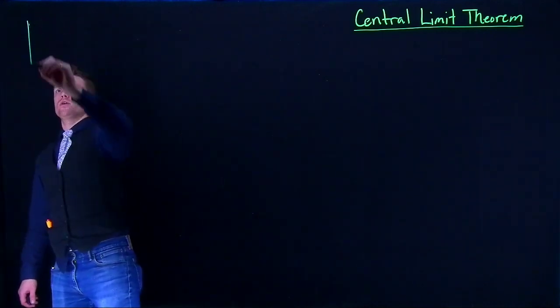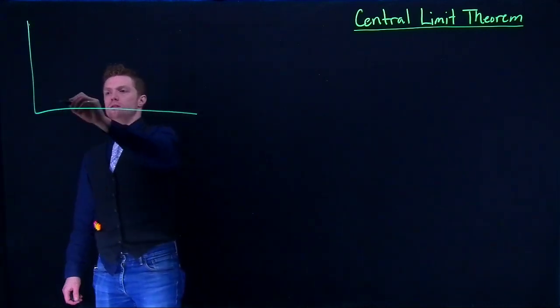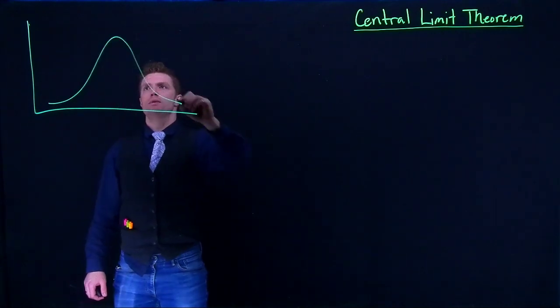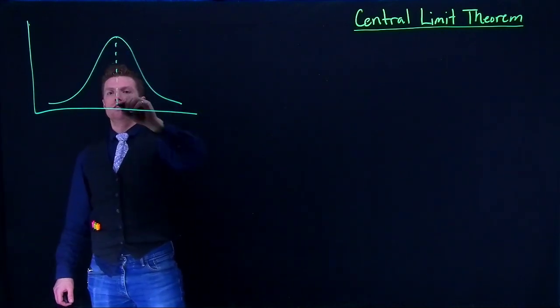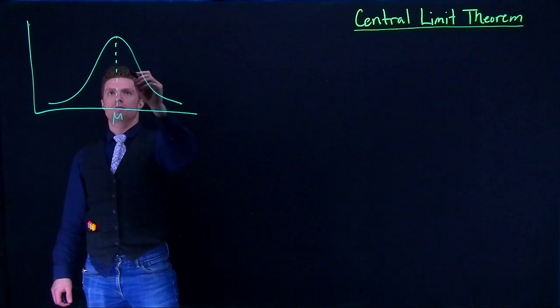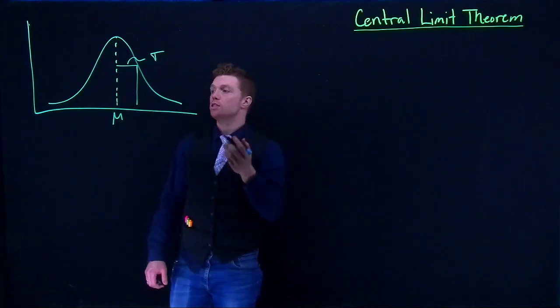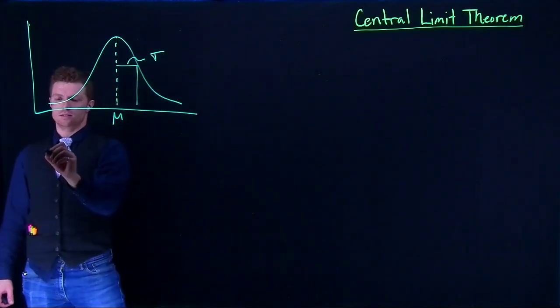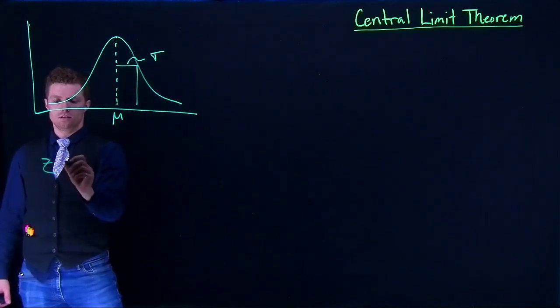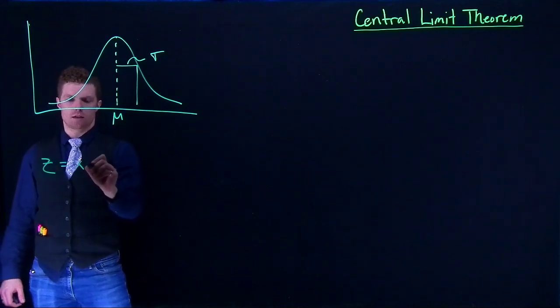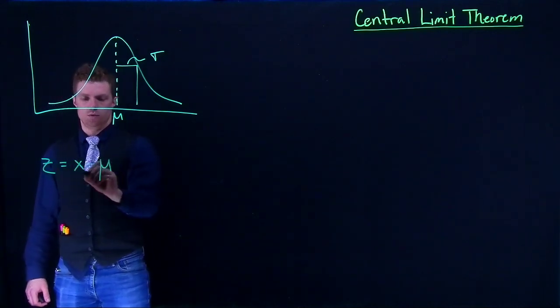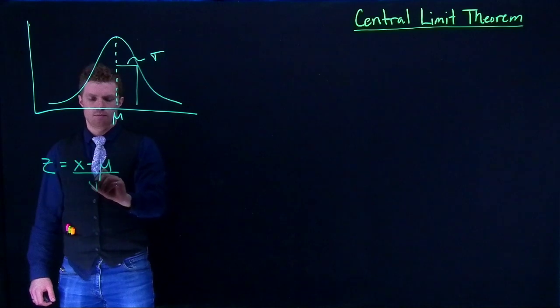So remember, with our normal distribution, we have our nice little bell curve with the center of this guy at the mean, and this guy is our standard deviation. And the equation that we've been using for this guy is z equals x minus mu divided by sigma.